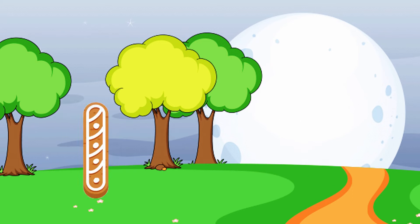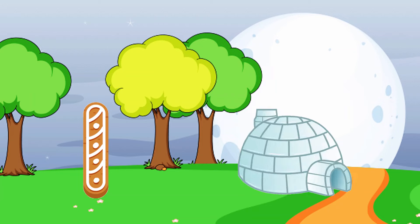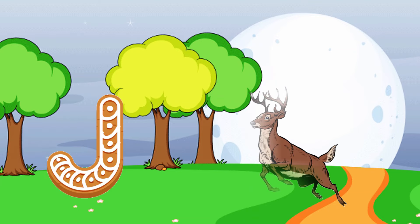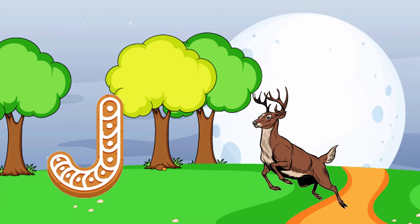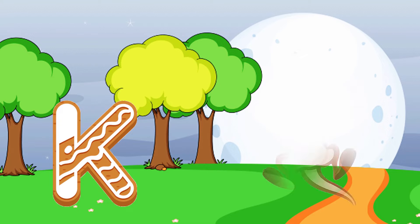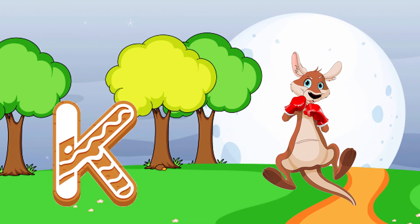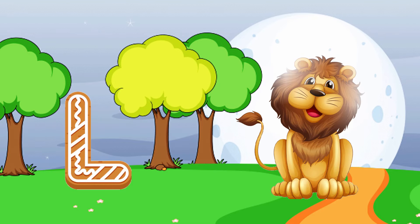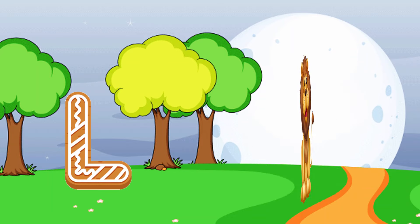I is for igloo, i-i-igloo. J is for jump, j-j-jump. K is for kangaroo, k-k-kangaroo. L is for lion, l-l-lion.